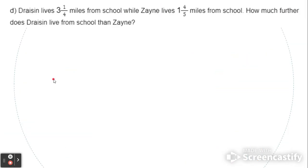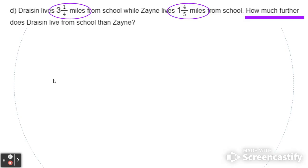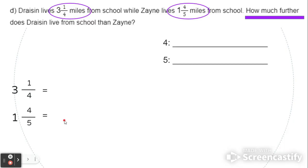Let's do one more word problem. Drayson lives 3 and 1 fourths miles from school, while Zane lives 1 and 4 fifths miles from school. How much further does Drayson live from school than Zane? Let's annotate this word problem. Drayson lives 3 and 1 fourths miles and Zane lives 1 and 4 fifths miles. 'How much further' tells me we're going to subtract these numbers. But the denominators 4 and 5 are not the same, so we need to create equivalent fractions. Let's list out our multiples of the denominators 4 and 5.